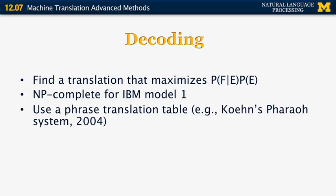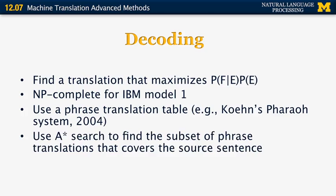So what people do instead for efficiency reasons is to use a phrase translation table, specifically the famous Pharoah system by Philip Koehn. And then use a heuristic search, A star,